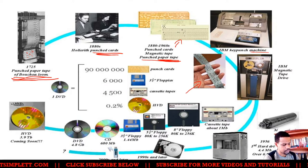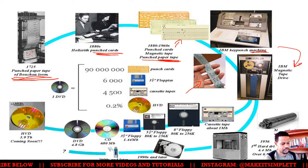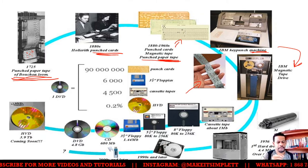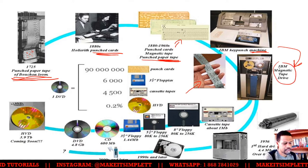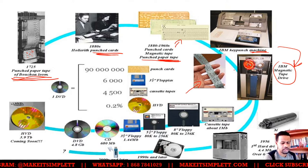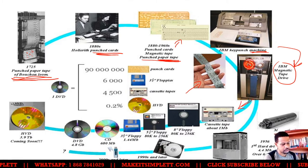Then they decided that using paper wasn't really working out too well, so IBM created something called the magnetic tape drive. Instead of using punch holes, they use magnetic spots — they magnetize certain parts of the tape. Wherever it's magnetized would be a one, and wherever it's not magnetized it'll be a zero. The tape drive works going around in a circle, reading from one side to the next.